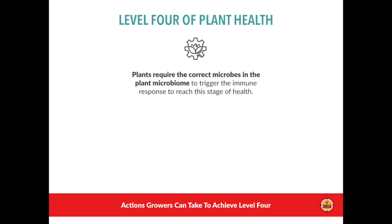To get plants to level four, they need the correct disease-suppressive microbes in the microbiome — both on the phyllosphere and in the rhizosphere — to trigger the immune response. We use foliar applications of Micro 5000 and soil applications of Spectrum microbials because they contain bacteria known to trigger SAR and ISR immune reactions. There are also a number of ingredients known to trigger these pathways: chitosan and chitin applications, seaweed applications, some types of fulvic acid, and various naturally occurring materials that produce immune-triggering effects.